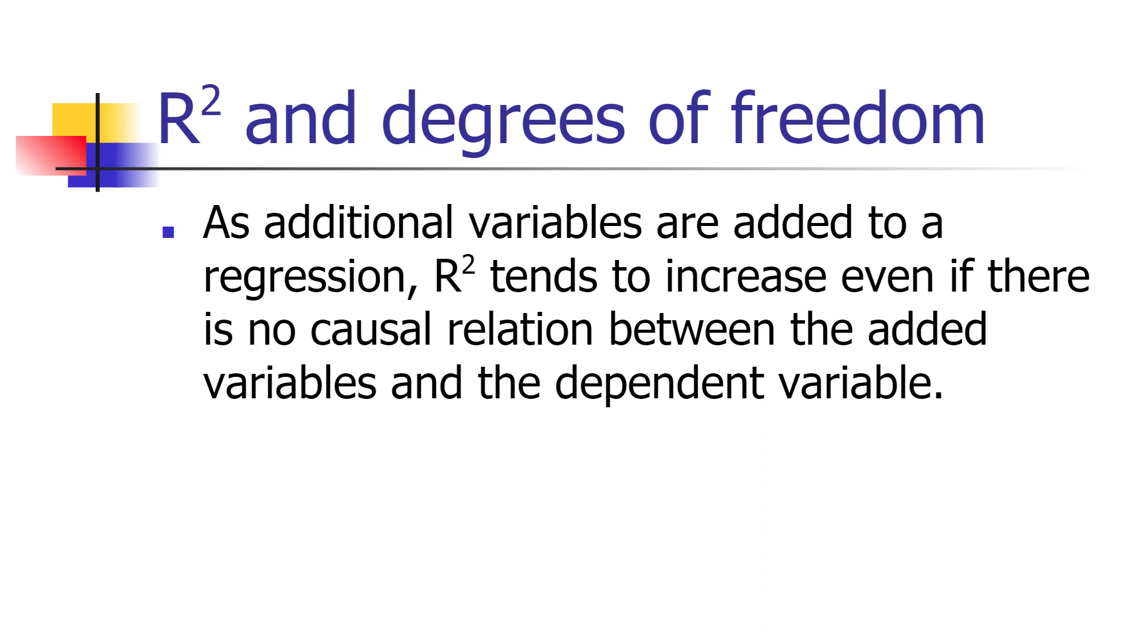If we have three variables, we can always exactly fit a relationship in three-dimensional space. Similarly, if we have a relationship between a dependent variable and nine independent variables, so we'd have ten terms we're estimating, including the constant term, if we had ten data points, the R-squared will always equal 1.